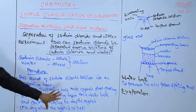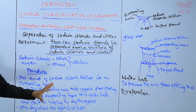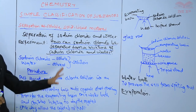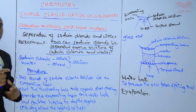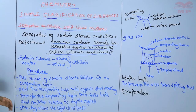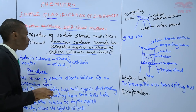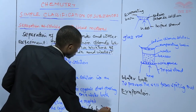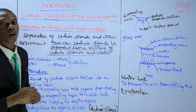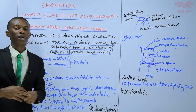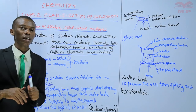When you transfer the evaporating basin onto a water bath and continue heating to dry the crystals, this is important to prevent the salt from spitting out in the process of evaporating. Once you form the crystals, allow them to cool. These crystals are now sodium chloride — water has already evaporated — and that is how you separate sodium chloride from a mixture of sodium chloride and water, which is a soluble-solid-liquid mixture.